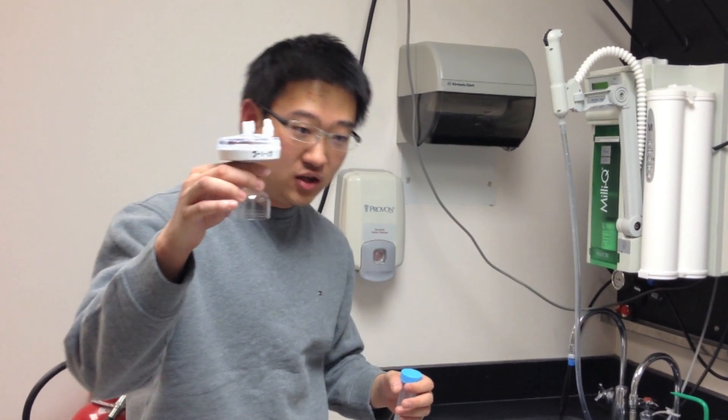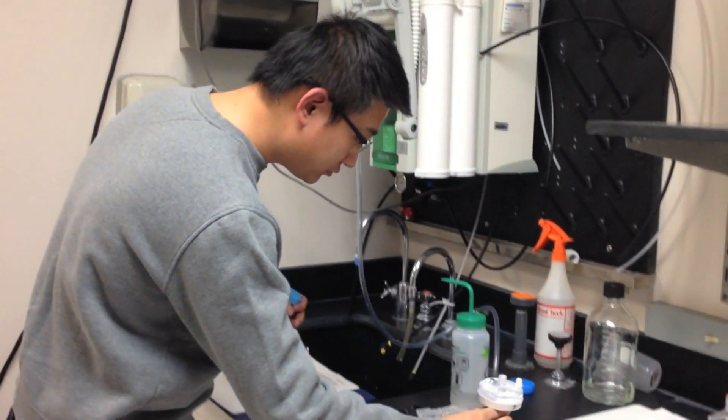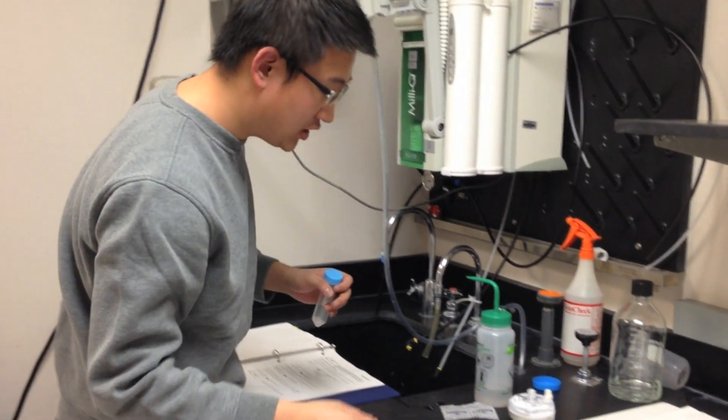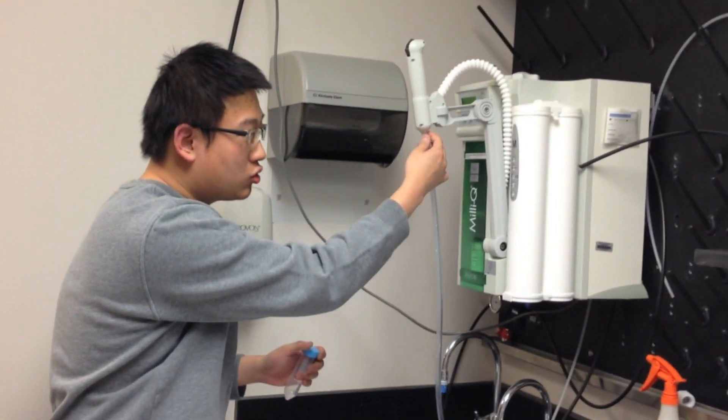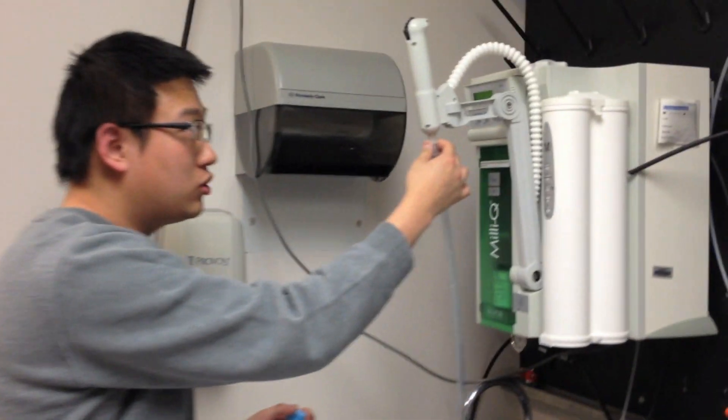Later on, we'll put this in the cold room to minimize the evaporation. Then secondly, you screw this Teflon tube to the water dispenser.